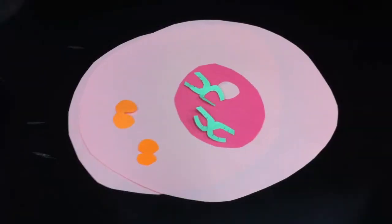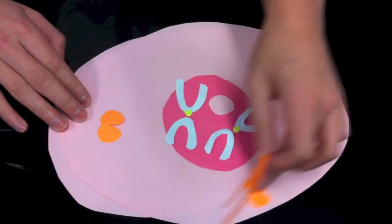Once the cell is ready to divide, the next stage of the cycle, mitosis, takes place in four phases.